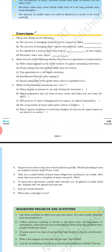Seventh question: how are clouds formed? When air moves up it gets cooler and cooler. After reaching some sufficient height, the air is so cool that the water vapor present in it condenses to form tiny droplets of water. These droplets start floating in the air, which form clouds.